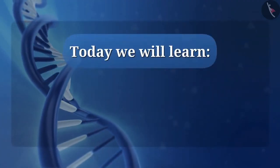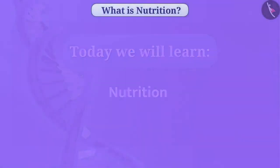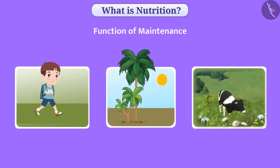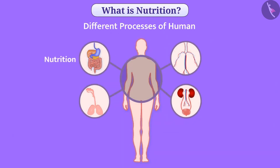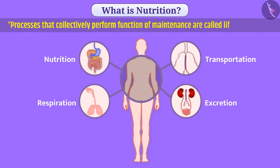Today we will learn about nutrition. In living beings, the function of maintenance should be carried out continuously so that they can remain alive. For this function, different processes like nutrition, respiration, transportation, and excretion work collectively. Processes that collectively perform the function of maintenance are called life processes. In this video, we will get information about nutrition.